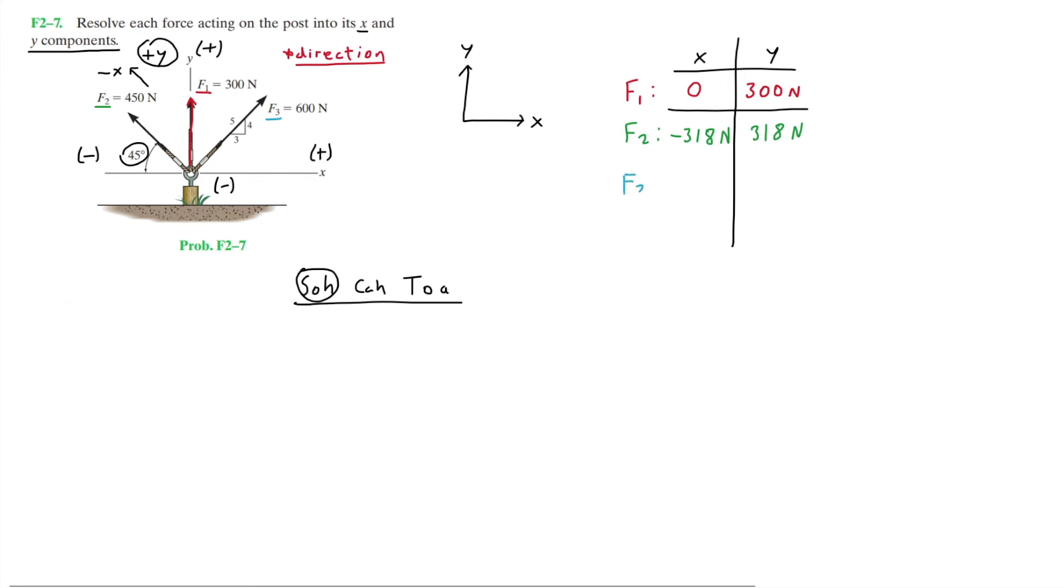Now moving on to the final force F3. We're essentially going to do the same steps as we did for F2 by forming a right triangle. But now, as you can see, for this one we're not given an angle to describe the direction. Instead we're given a 3-4-5 triangle, which is a small slope triangle. I'm just going to write that triangle into the drawing. This is our X, this is our Y.